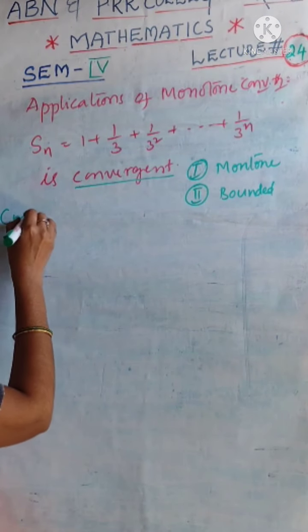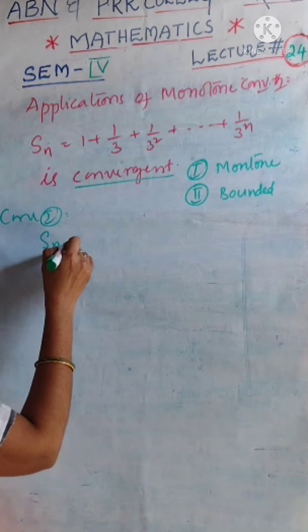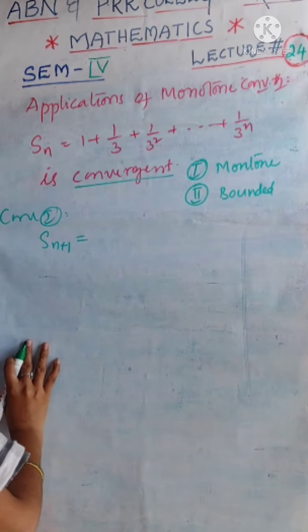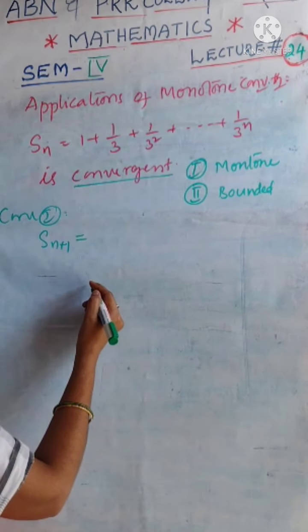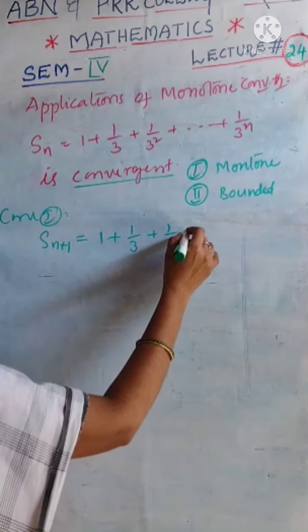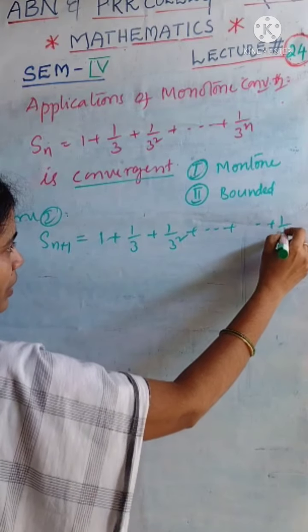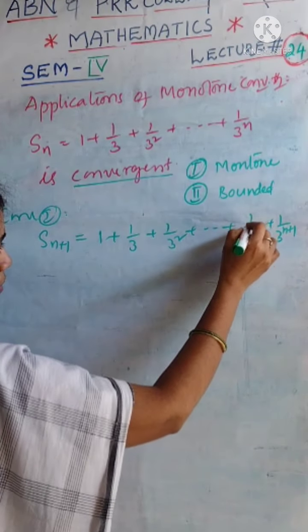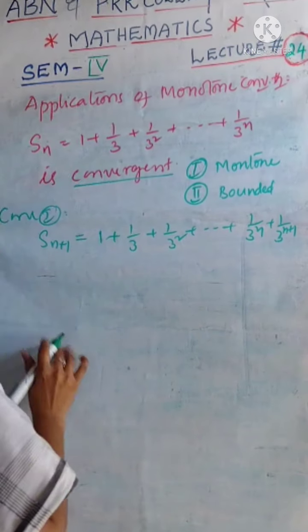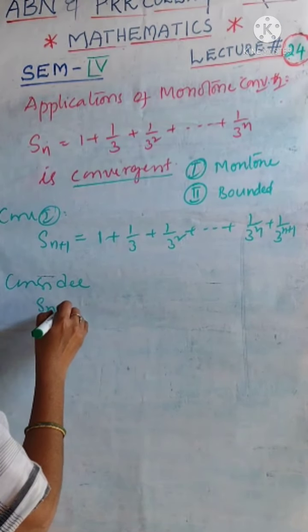Coming to case 1, consider consecutive term Sn plus 1 for the given sequence that is equal to 1 plus 1 by 3 plus 1 by 3 square and so on, 1 by 3 power n plus 1. What is the before term? 1 by 3 power n. Now consider the difference between these two consecutive terms.